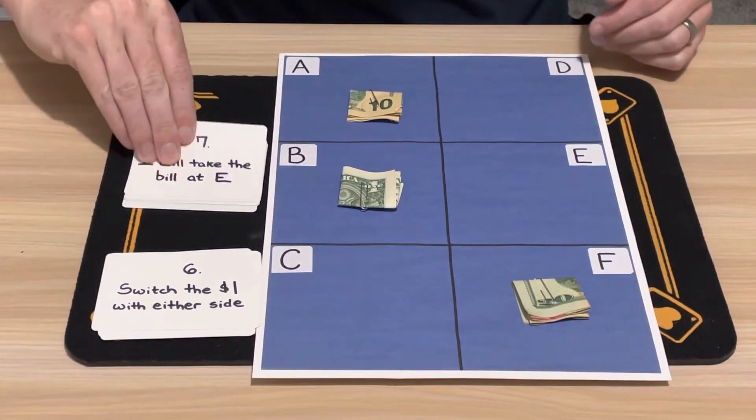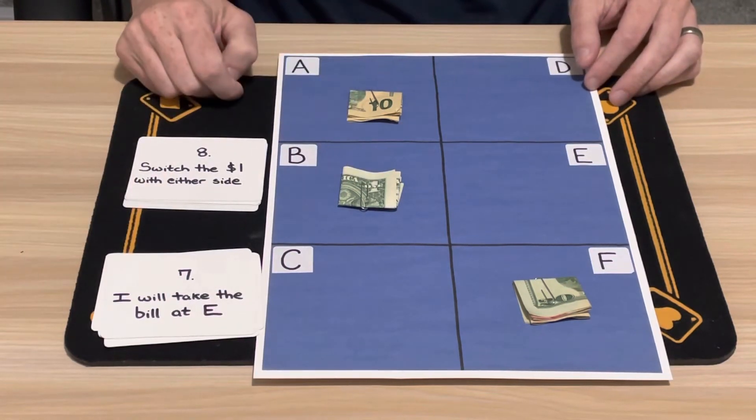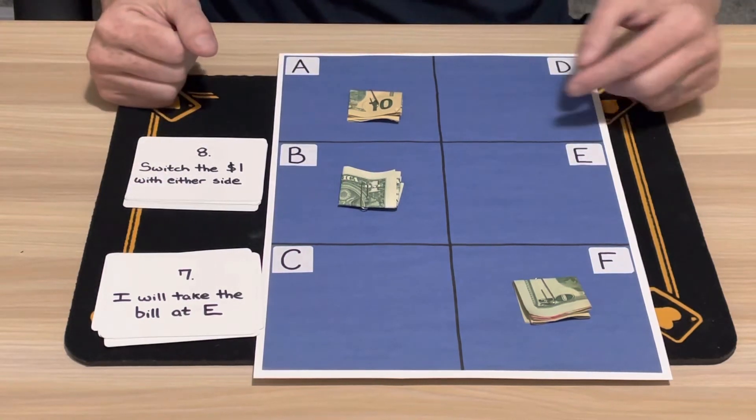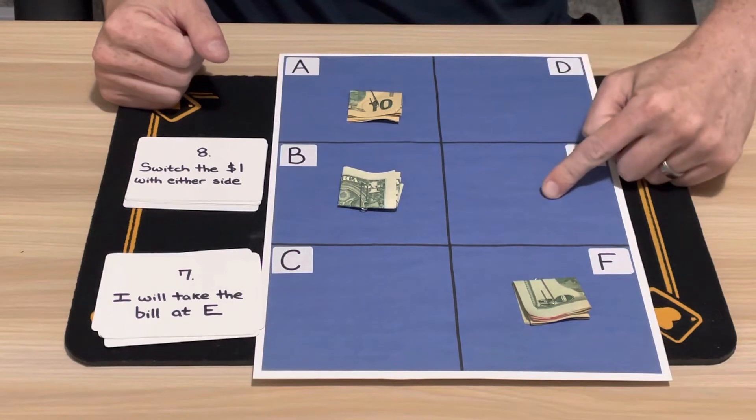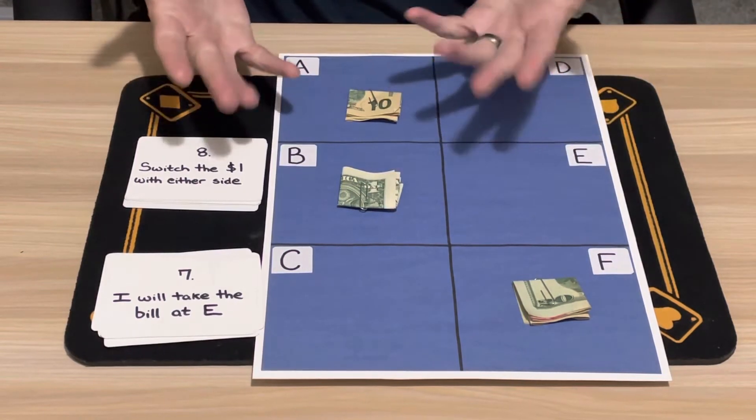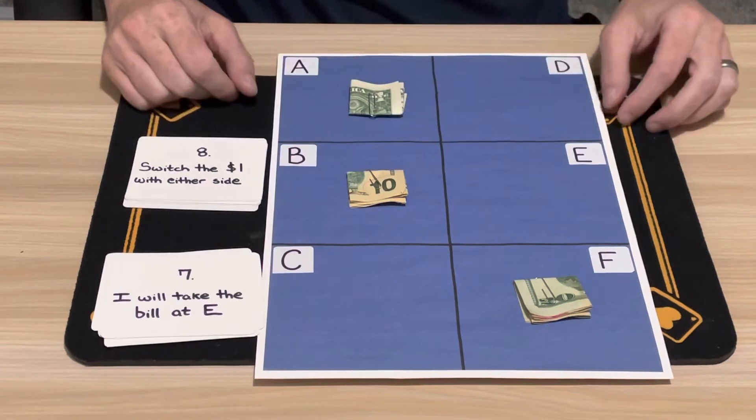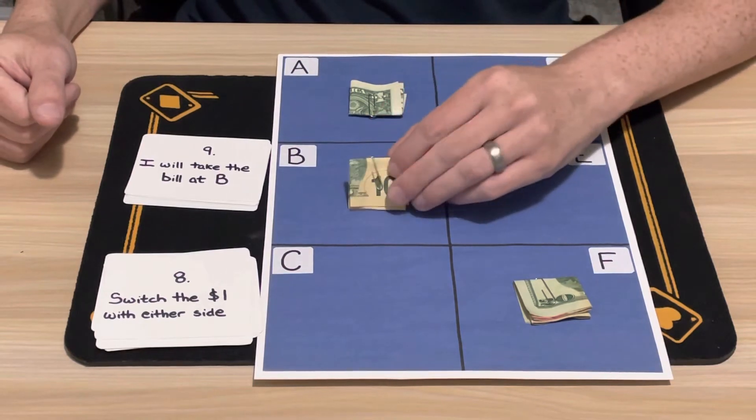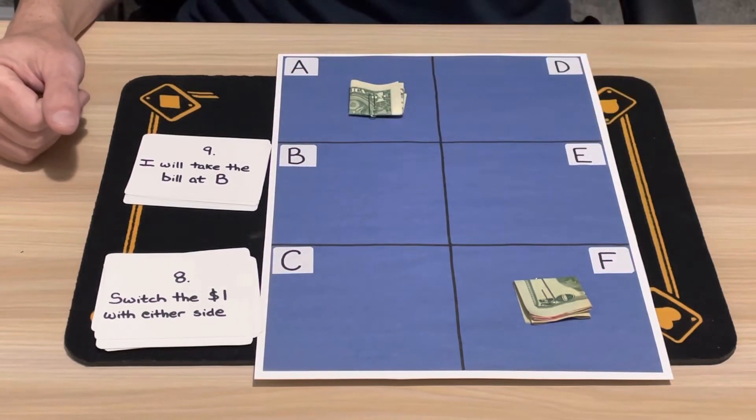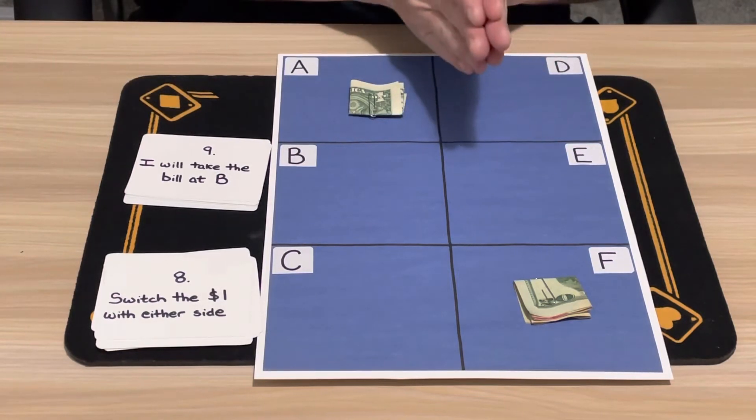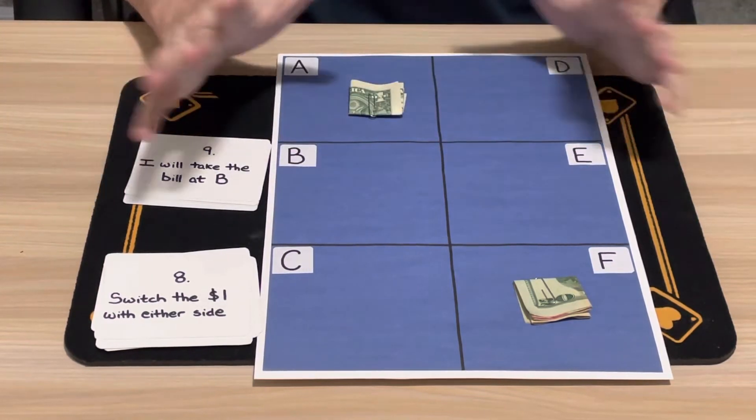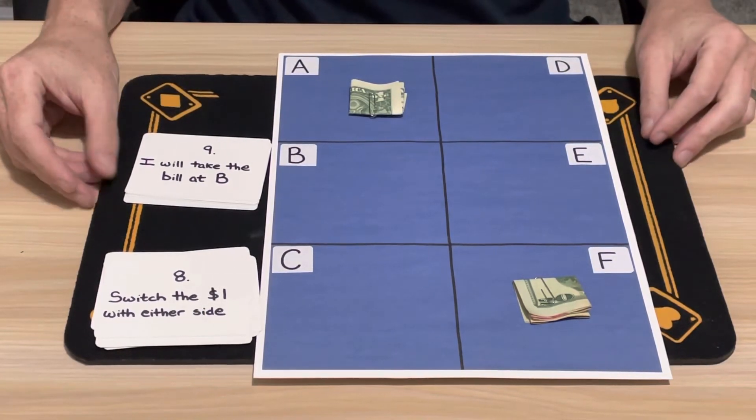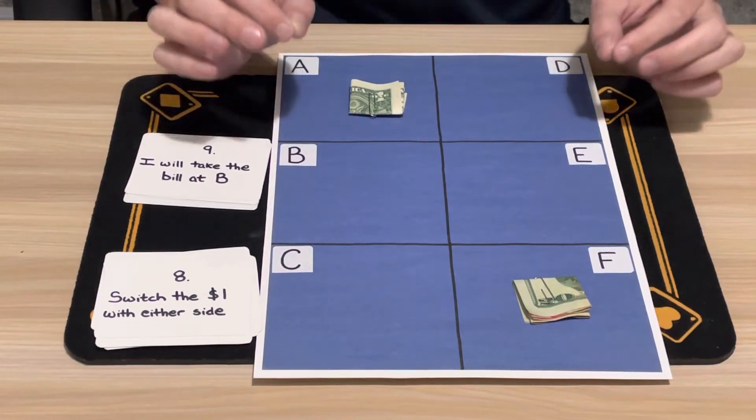Step eight: switch the $1 bill with either side. Now at this point we're kind of running out of options as we eliminate bills. There's no bill here to switch it with, no bill here. You're kind of left with your only option of switching it with the $10, so we'll just do that. Step nine: I will take the bill at B, which is that $10. That goes back to me, leaving us with only $20 that the spectator can win. But you know what, that's still $20. I can still buy a couple drinks or a nice meal somewhere.